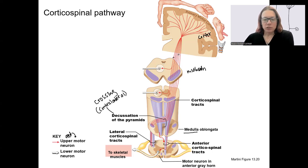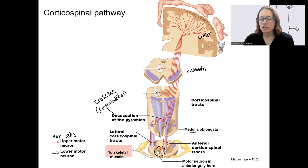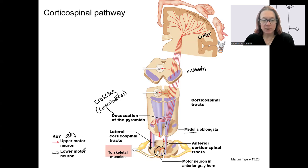We're still in the corticospinal tract. Eventually this information synapses at the ventral horn of the spinal cord. This could happen in any segment — this is showing it happening further distal. That lower motor neuron, shown in white, is going to the skeletal muscles, releasing acetylcholine on the skeletal muscles.